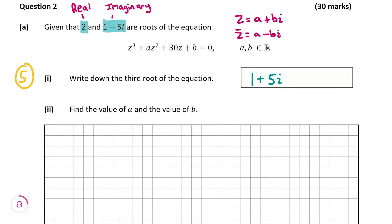Now we're going to look at part A(2) of the question, and this is worth 10 marks. Here we have to find the value of a and the value of b. To do this, I'm going to use my three roots — 2, 1 minus 5i, and 1 plus 5i — to form another equation, and put it equal to the equation at the top. Whatever number is in place of a and b in my new equation will be my values for a and b.